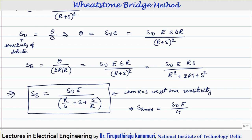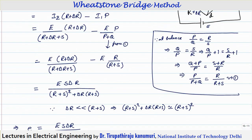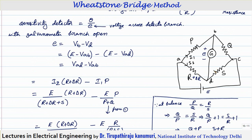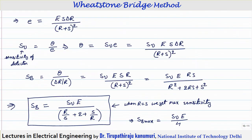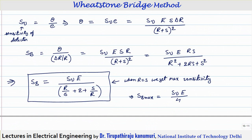To summarize: under balanced conditions, P should equal Q and R should equal S. If kept in that configuration, the galvanometer will have maximum sensitivity; for any other case it will have less sensitivity. I hope this Wheatstone bridge method is completely clear. If you have any queries, please leave your comments in the comment section below and I will answer them. Thank you very much.